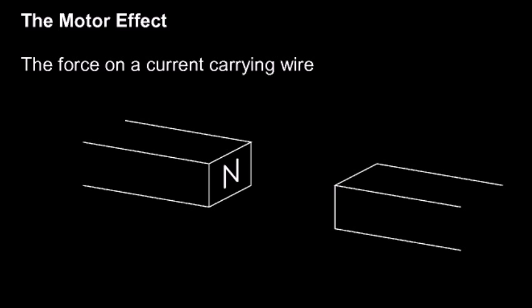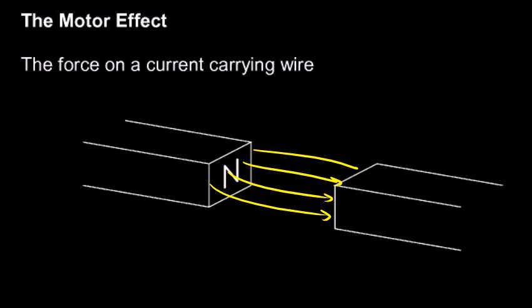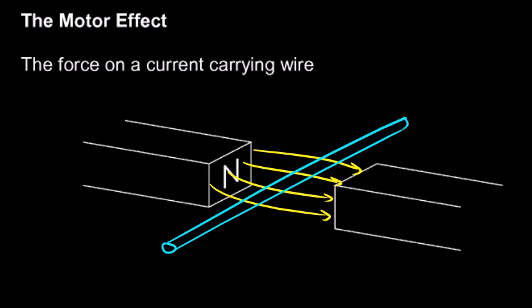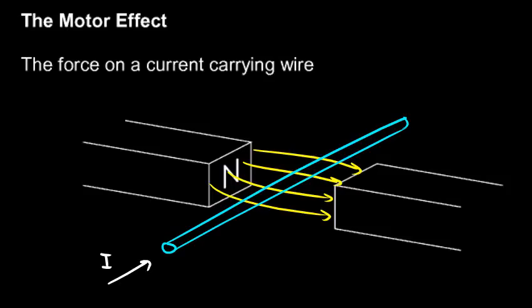If we imagine a magnetic north pole and a south pole near each other, there's a magnetic field in between them, and we can draw these field lines in — they would look something like that. Now let's imagine running a wire across this field. We'll put an electric wire here and put some current flowing through it, called I, the symbol for current.